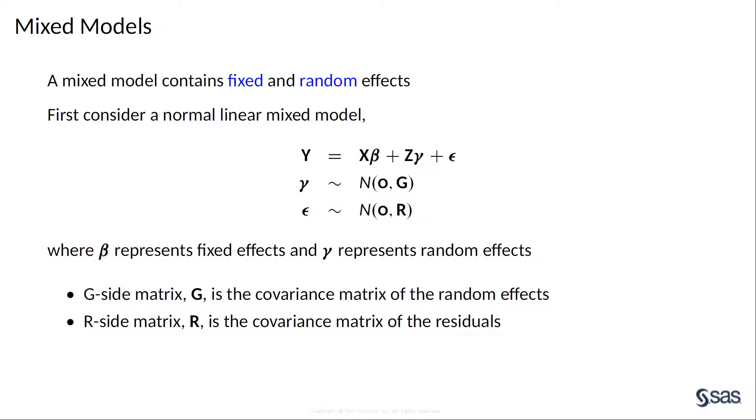SAS Stat software distinguishes two types of covariance matrix. The G-side matrix, denoted by G, is the covariance matrix of the random effects, and the R-side matrix, denoted by R, is for the residuals.